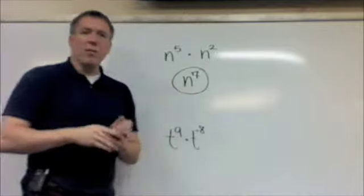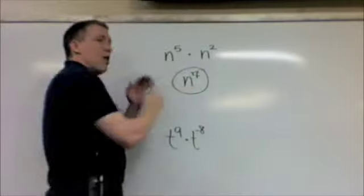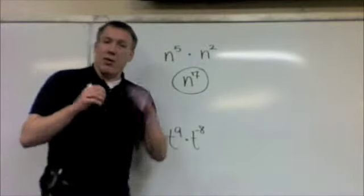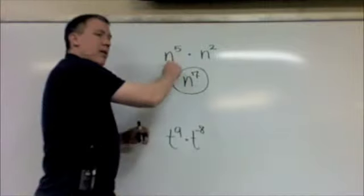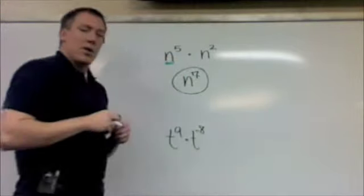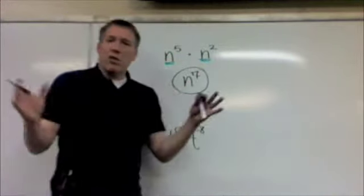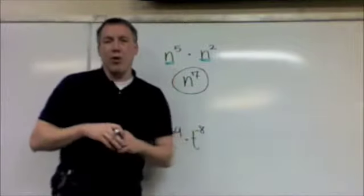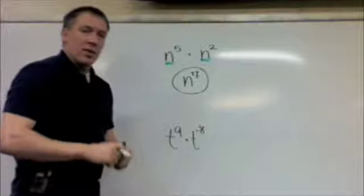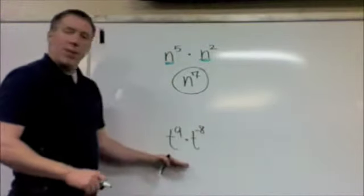Now, the simple rule that some of you may remember is that if I have two things here that are being multiplied that have the same base, if there's an exponent, that means there's a base. The base is the thing that contains the exponent. If they have the same base, in this case, they both have n, all I do is I add the exponents when I'm multiplying. So five plus two is seven. So this is n to the seventh.